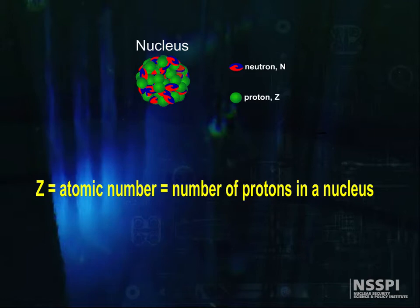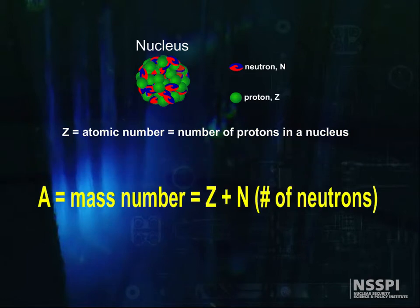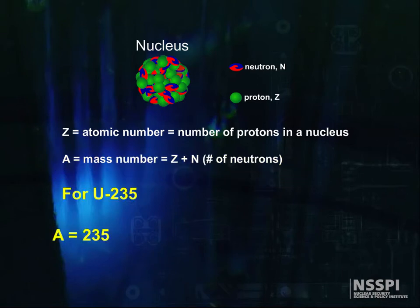Z, the atomic number, is the number of protons in a nucleus. A, the mass number, is the sum of Z and the number of neutrons. In the name U235, the 235 is the mass number. We know that uranium has an atomic number of 92 because it has 92 protons. So the number of neutrons by difference is 143.